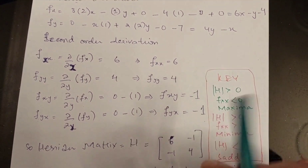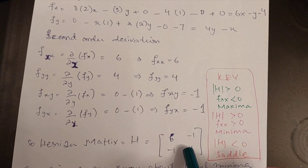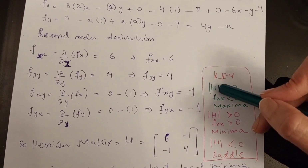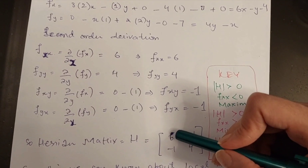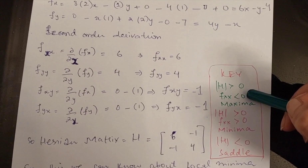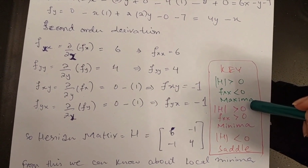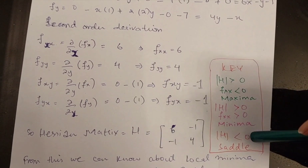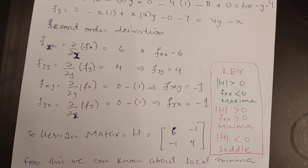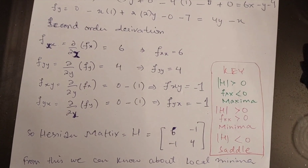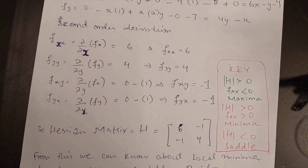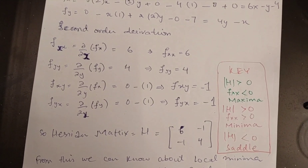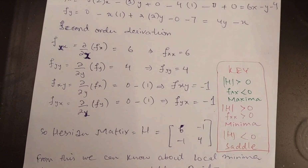This Hessian matrix is very helpful in finding out whether at a given point we have a minima, a local minima, a local maxima, or a saddle point. The rule says: if the determinant of the Hessian matrix is greater than 0 and fxx is less than 0, you are at a local maxima. If the determinant is greater than 0 and fxx is also greater than 0, you are at a local minima. However, if the determinant is less than 0, you are at a saddle point — a point which is neither a minima nor a maxima, shaped like the seat on top of a horse.